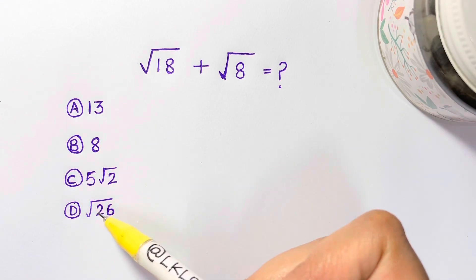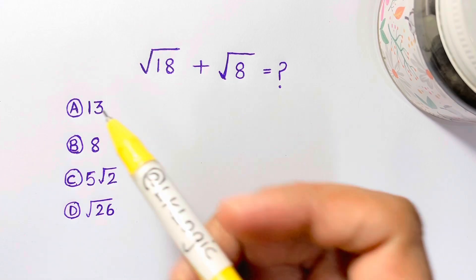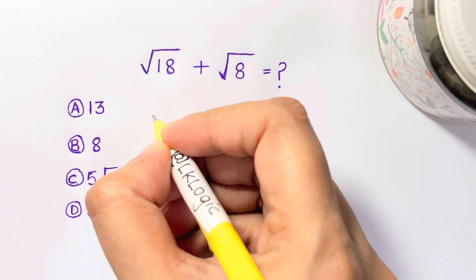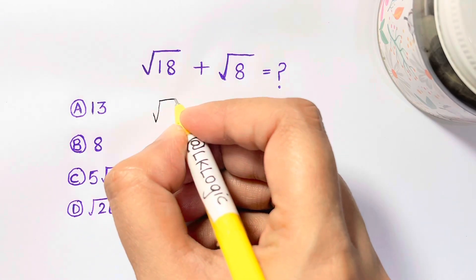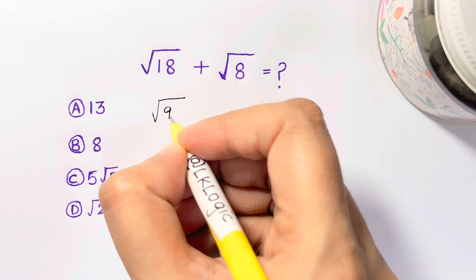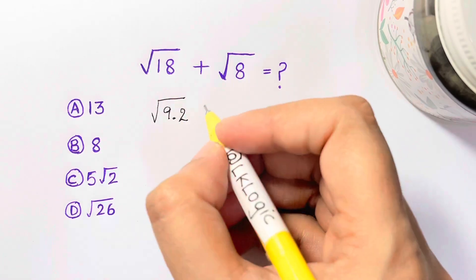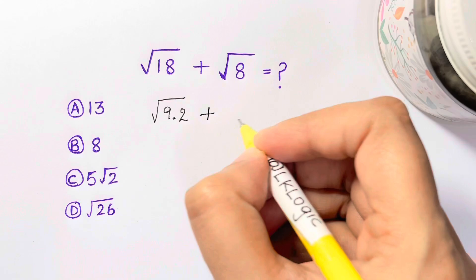Guess your answer and keep watching for the solution. Square root of 18 can be written as square root of 9 times 2. Now I should say you cannot add them directly. Square root of 9 times 2 plus square root of 8 can be written as 4 times 2.